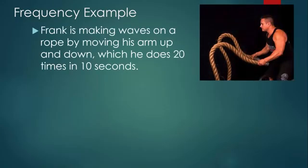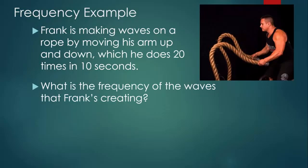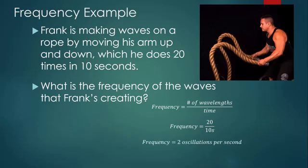Let's take a look at an example of a problem involving frequency. So here's Frank, and he's making waves on a rope by moving his arm up and down, which he does 20 times in 10 seconds. So we want to figure out what is the frequency of the waves that he's making. Frequency is the number of wavelengths that are created divided by time, and we can see from the description that he's creating 20 wavelengths, that's 20 oscillations, every 10 seconds. So we have 20 divided by 10 seconds. Notice the 20 doesn't have any units. We don't measure that, we just counted. 20 divided by 10 seconds gives us a frequency of two oscillations per second, and if we want to put our new unit on there, which we do, we can call that 2 Hertz.